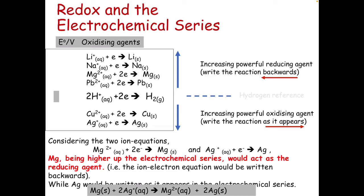In the middle, we've got the hydrogen reference. Basically, it's based on whether metals are better oxidising or reducing agents relative to hydrogen gas and a special electrode — that's more advanced higher, we won't look at that. Just take it as a reference. The ones below hydrogen tend to be better oxidising agents, and the ones above it tend to be better reducing agents, and you have to write that equation backwards.